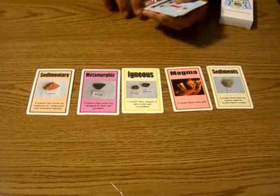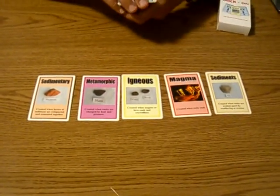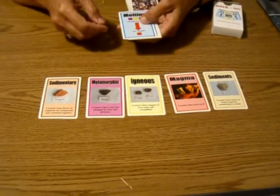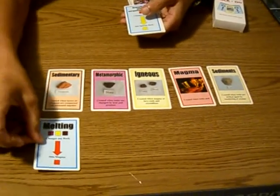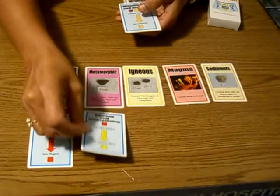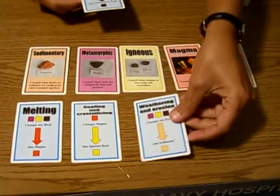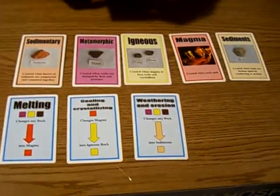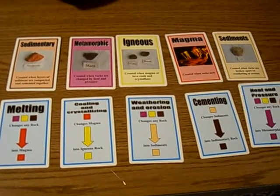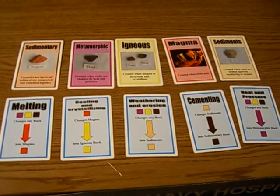There are also cards for the processes that the rocks go through as they're changing from one rock type to another — as they melt, cooling and crystallizing, weathering and erosion, cementing, and heat and pressure — changing one rock type to another.